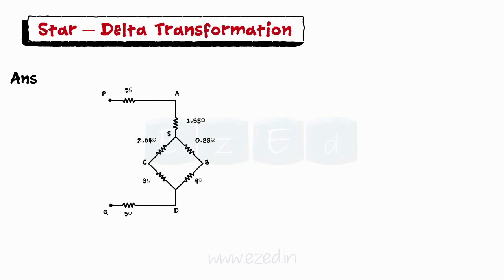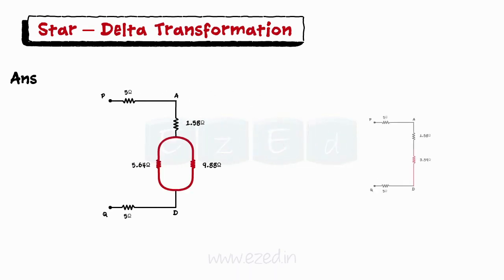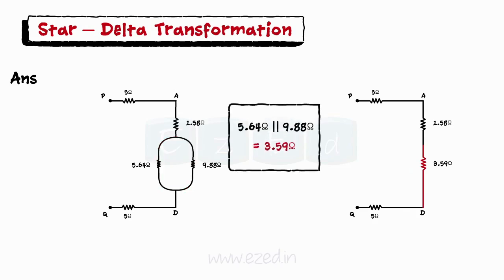Now, in the simplified network, there are two series branches, one as SCD and second as SBD. We replace them with equivalent series resistances. These series equivalents are in parallel to each other, so it is further simplified using parallel rule.